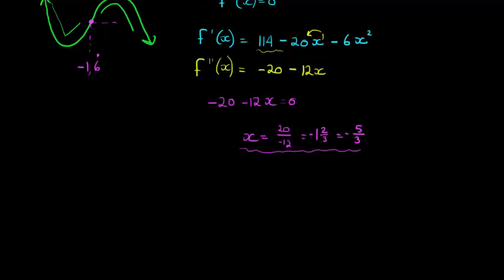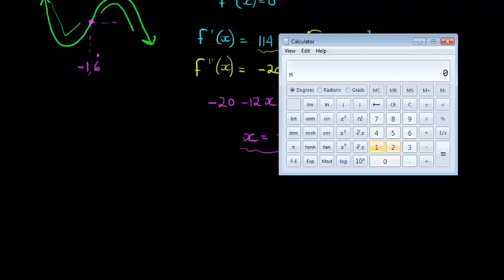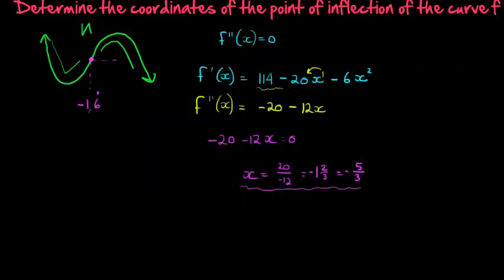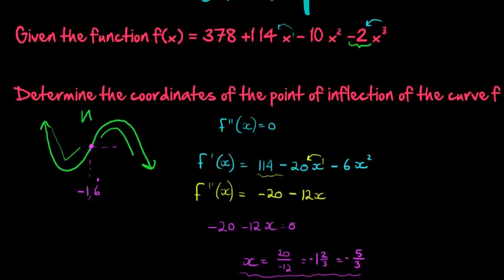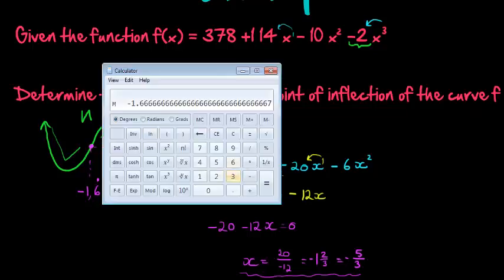That's 1.6 repetitively, so let's substitute that. We have negative 5 over 3, and we're going to memory store that so we can recall it as we're substituting into our function. There's our function, substitute in there. We get 378 plus 114 times memory recall, minus 10 times memory recall squared, minus 2 times memory recall cubed.